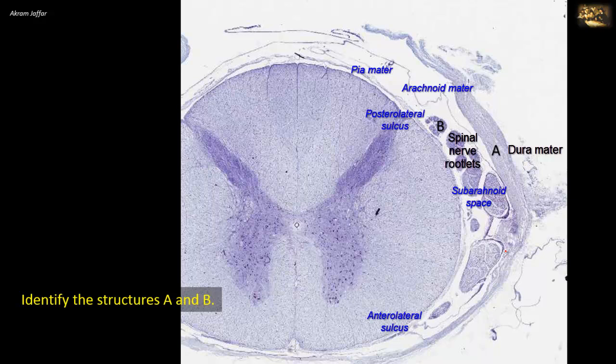Several of these rootlets join to form a nerve root. You can see here that the nerve rootlets are cut obliquely. The reason is that the nerve rootlets have to descend before leaving the vertebral canal through the intervertebral foramen, and the descent is with increasing obliquity as we go distally in the spinal cord.